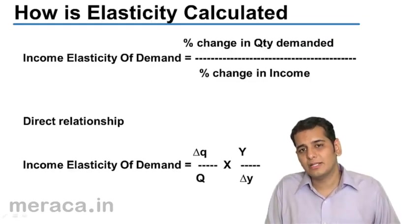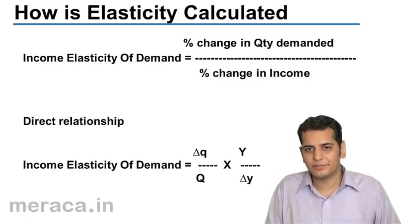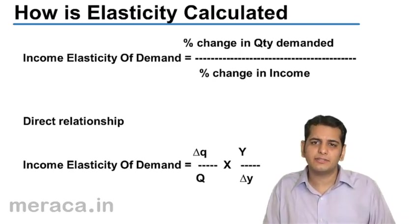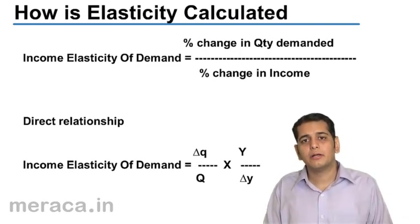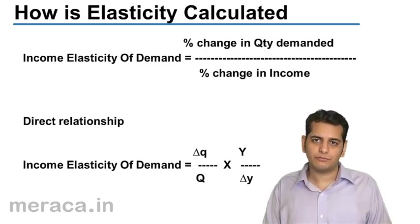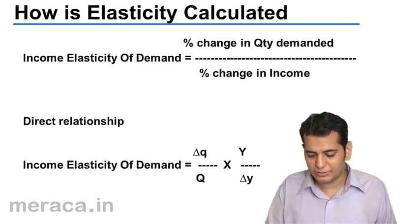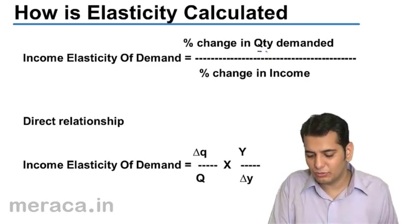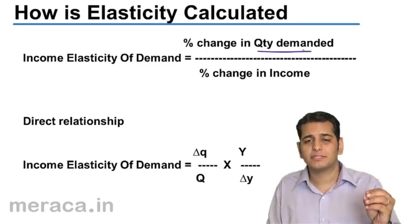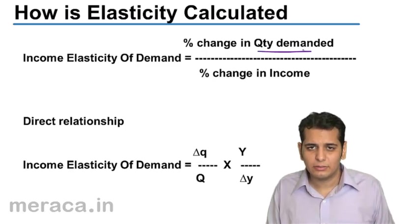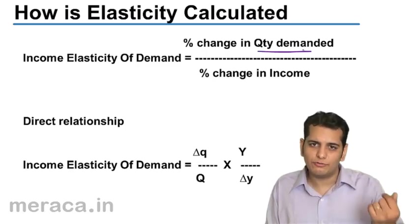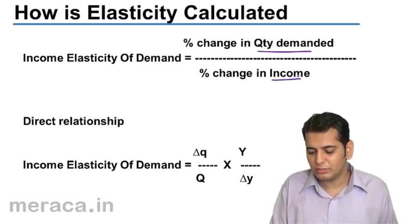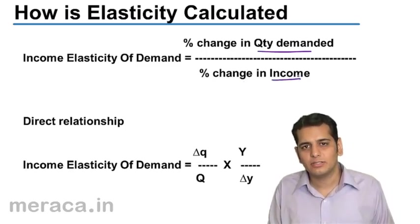How is income elasticity calculated? It is calculated in the same manner as price elasticity of demand. Price elasticity of demand is calculated with the formula: percentage change in quantity demanded divided by percentage change in price. But here, in place of price, we have income — so in the denominator, it is percentage change in income.